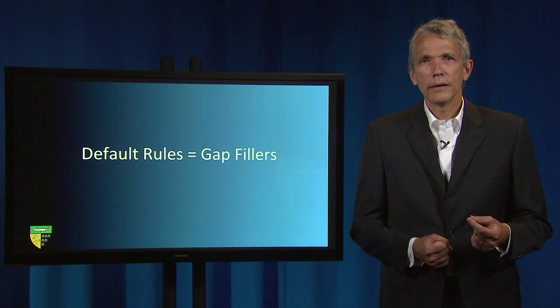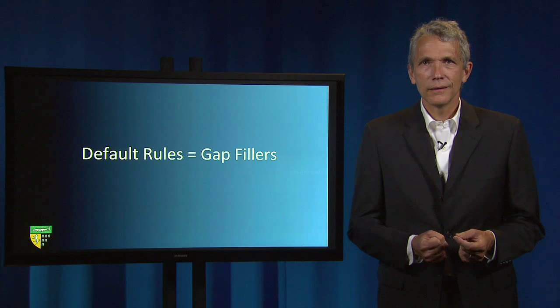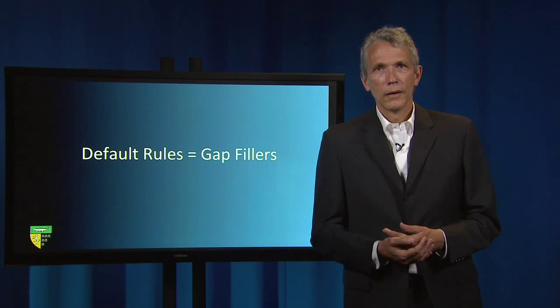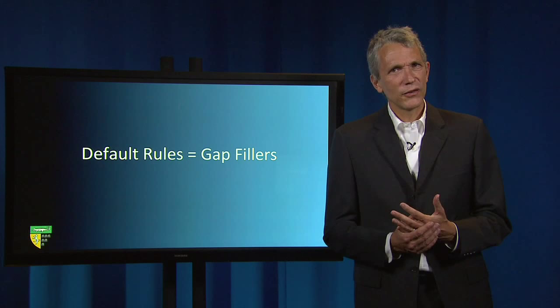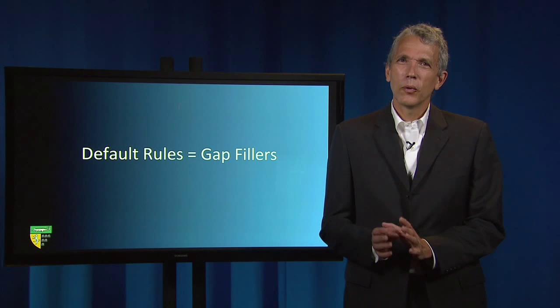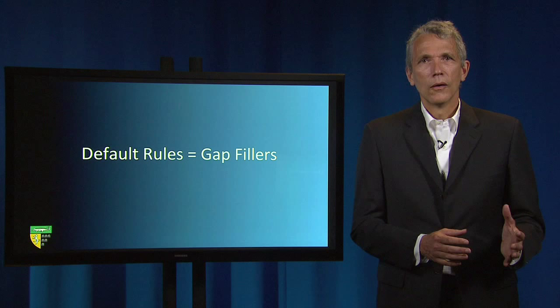When a statute prescribes a rule that will apply "unless otherwise indicated" in a private contract, it is announcing a default rule. But many times statutes and decisions will not expressly address whether a particular rule can be altered by private agreement, or what words would be sufficient to accomplish such altering. When a rule is merely a default, it's important to understand the necessary and sufficient requirements for opting out of it, or what are known as altering rules.